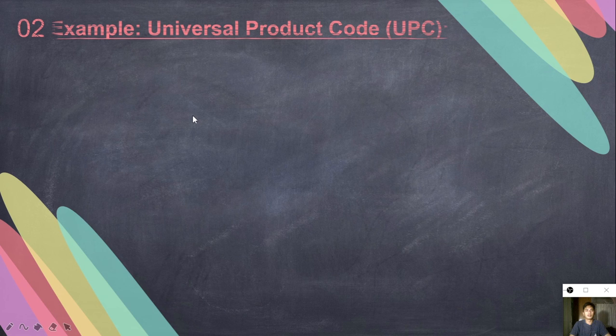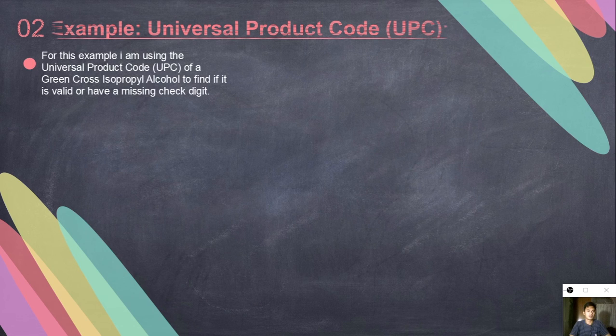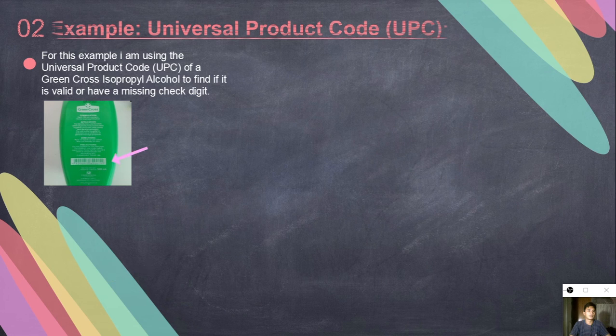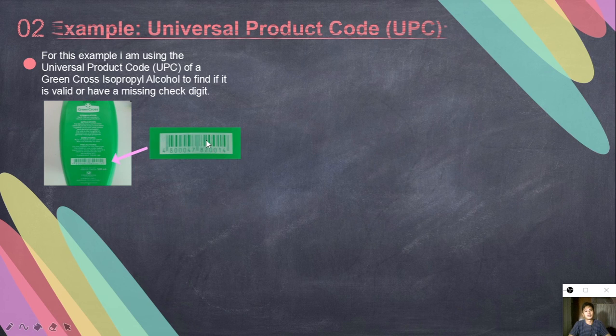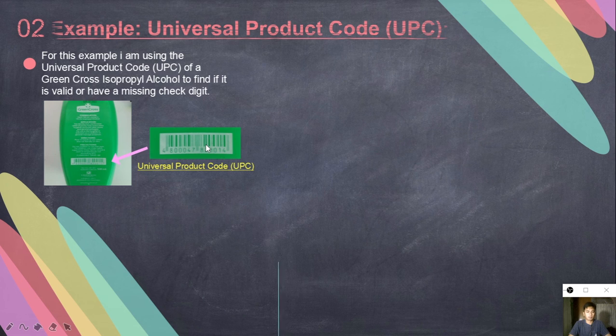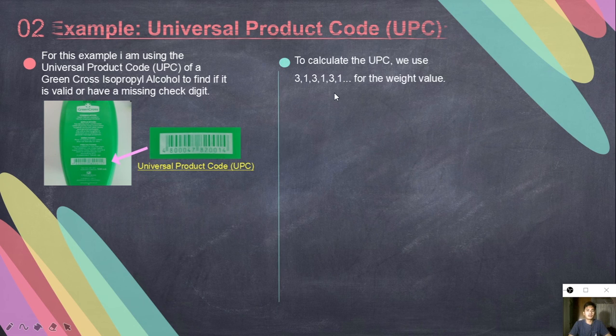For the third example, we will use the universal product code of some products or some household products. For this example, I am using the universal product code or UPC of a Green Cross isopropyl alcohol to find if it is valid or has a missing digit. This is the UPC of a Green Cross isopropyl alcohol, shown in the picture. To calculate the UPC, we use 3131 for the weight values.